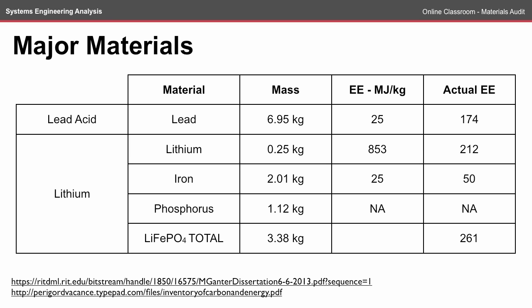In the lithium batteries, the main chemistry is divided into lithium, iron, and phosphorus. Lithium has quite a high embodied energy, but there isn't a considerable mass. Unfortunately, we couldn't find the embodied energy of phosphorus, but ignoring that, the embodied energy of the lithium battery is higher than the embodied energy of the lead acid battery.